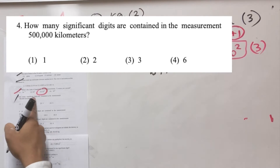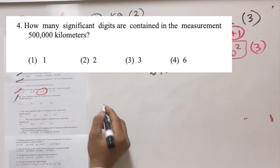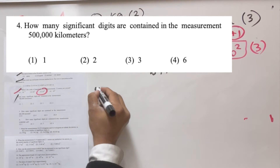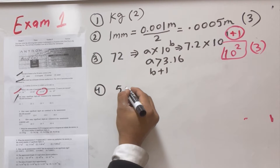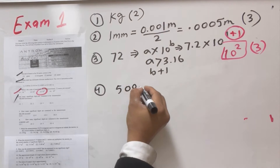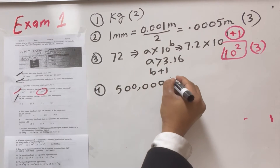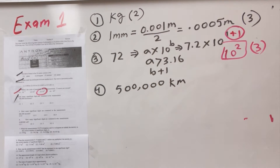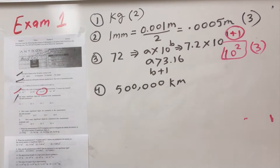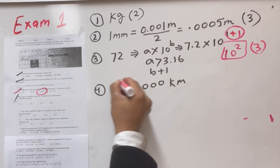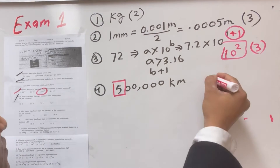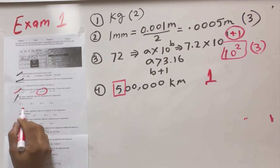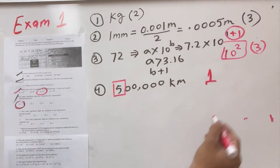Question number four: how many significant figures are in 500,000 kilometers? You have only one significant figure — just the digit 6... actually just one significant figure. That is option number one.